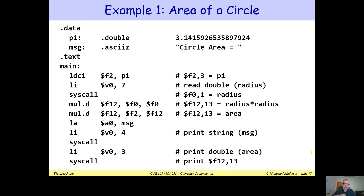The first example is calculating the area of a circle. The area equals pi times R squared. We will ask the user to input the radius, calculate pi times R squared, and output the area. Pi is defined in the data segment as a double precision constant using the .double directive, storing the value 3.14159... as eight bytes. The assembler converts this decimal number into binary IEEE 754 double precision representation.